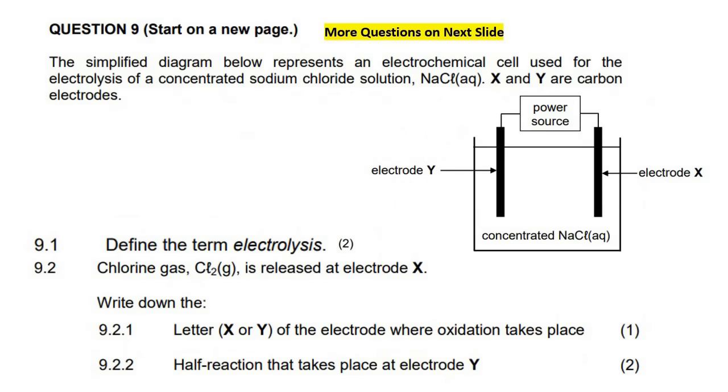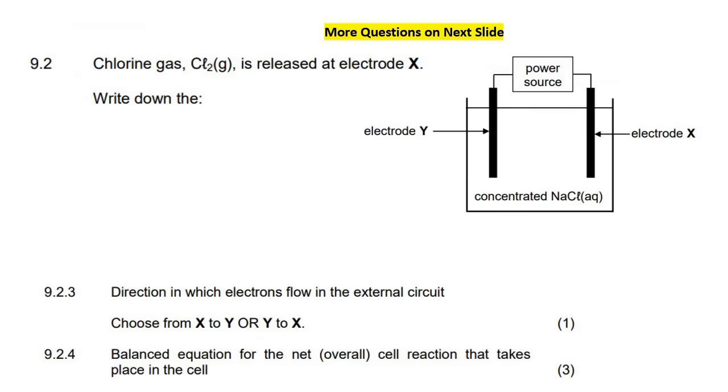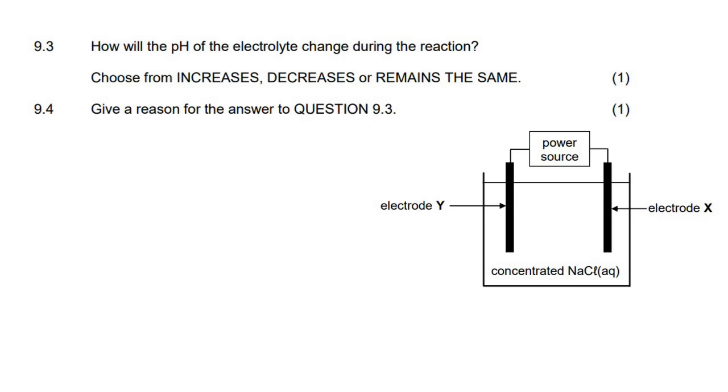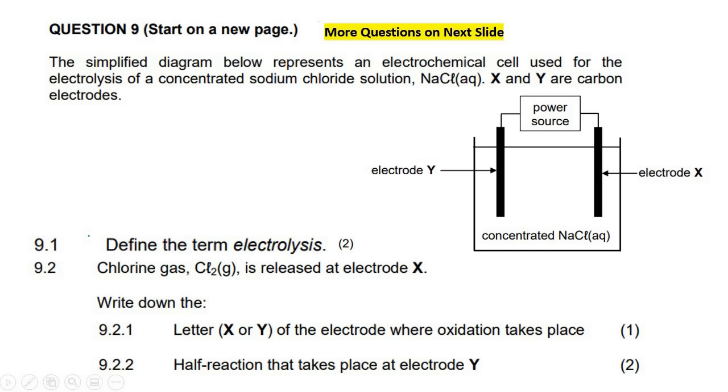Alright, so with this question, there will be more questions on the next slide. Let me quickly show you what other questions you have. It says the simplified diagram below represents an electrochemical cell used for the electrolysis of concentrated—that word might be important, remember we've spoken about concentrated and dilute and what that means—sodium chloride solution.